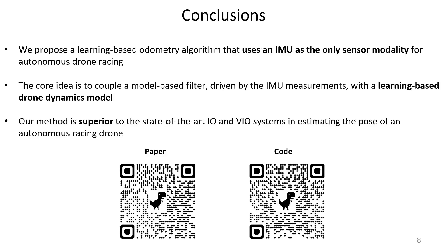To conclude, we propose in this work a learning-based odometry algorithm that uses an IMU as the only sensor modality to estimate the state of a racing drone. We achieve it by coupling a model-based filter, driven by the IMU measurements, with a learning-based drone model. Although our work focuses on autonomous drone racing, we believe that the proposed approach could have broader implications for reliable state estimation in agile drone flight — for example, in tasks such as routine inspection and surveillance, where the drone is required to fly trajectories that are known beforehand.